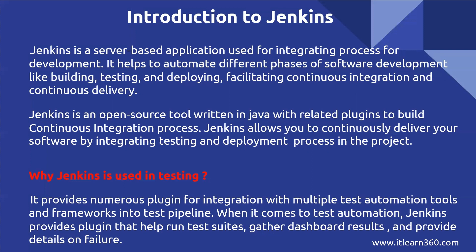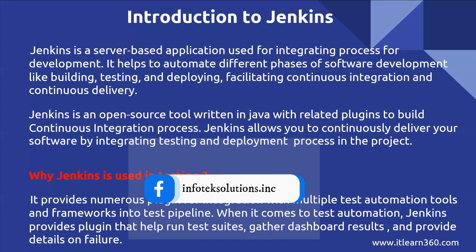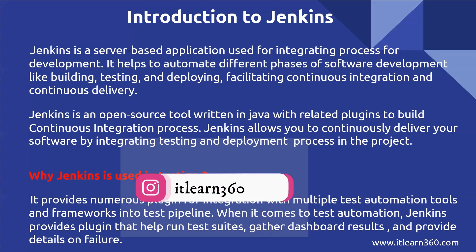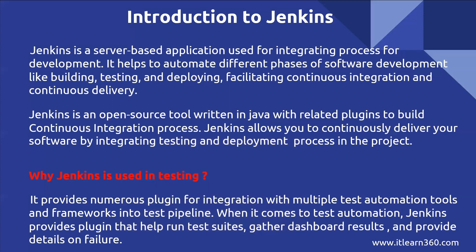This continuous integration and continuous delivery process is the process that executes in Jenkins. That means if you do some changes you can do so on a continuous basis, and once the changes are integrated you can deploy after the complete project is integrated. Jenkins is an open source tool written in Java with related plugins to build the continuous integration process. Jenkins allows you to continuously deliver your software by integrating testing and deployment processes. Once development is done, then testing is done, and if testing is completed without any failures then we can deploy the project.